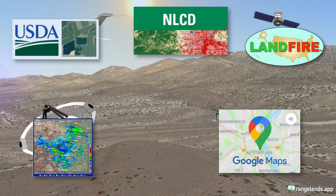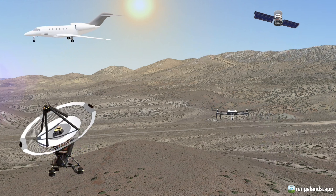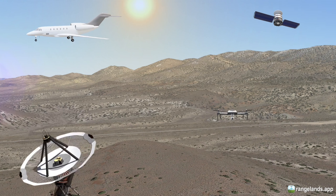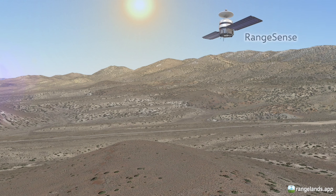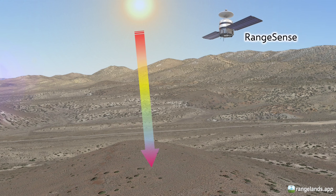While there are a variety of different types of remote sensing, here we're going to simplify things and focus on one of the most common and useful approaches: passive remote sensing. Passive remote sensing, as our fictitious satellite — which we'll call Range Sense — will demonstrate, relies on the energy from the sun.